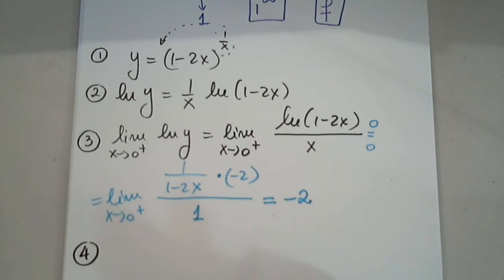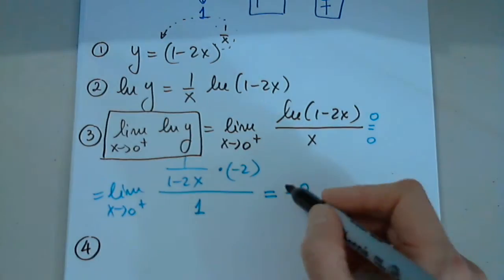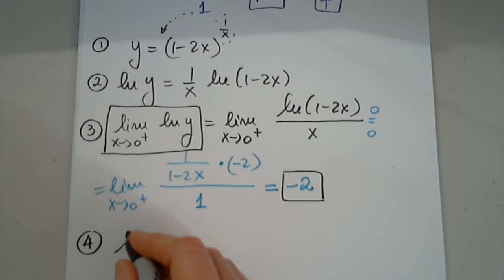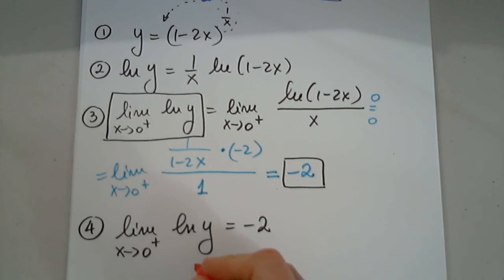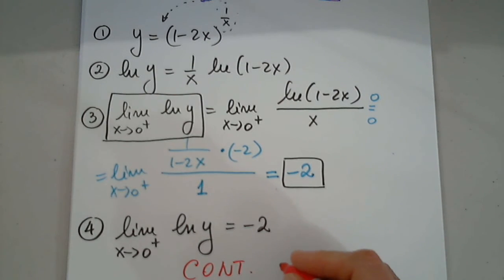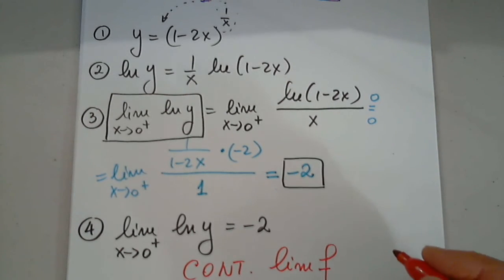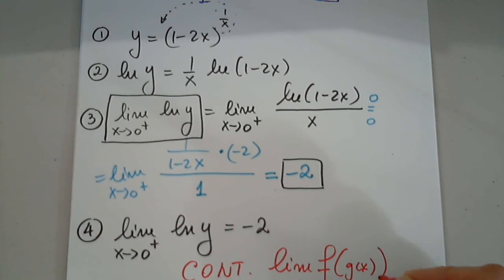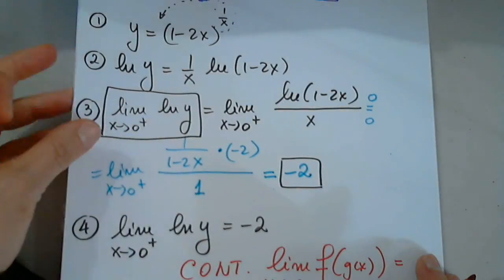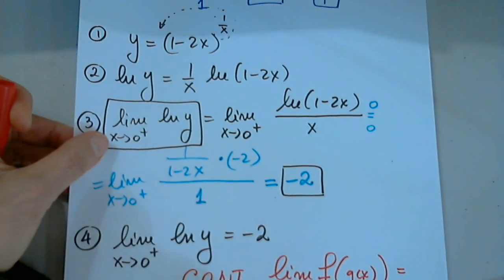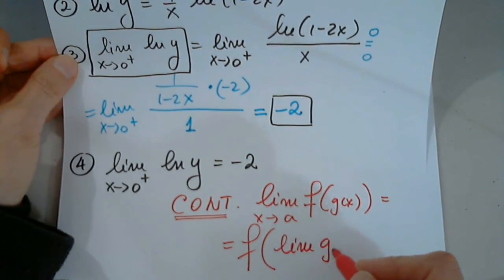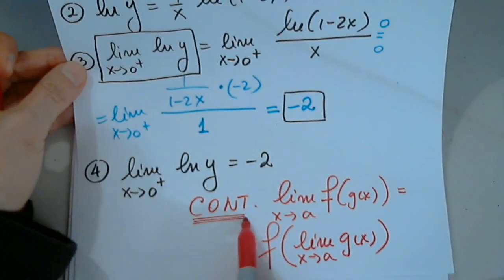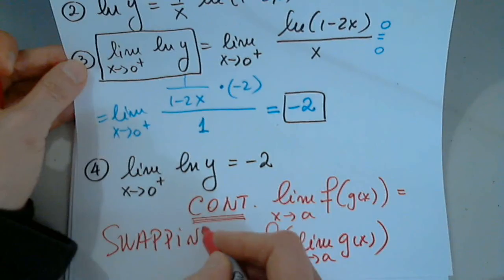Good. So, now in step 4, I copy the beginning and I copy the end. Not the rest in the middle. So, I have limit as x approaches 0 from the right, natural log y equals negative 2. And now, I want to refresh our memory. Under continuity, we are allowed to write the limit of f of g of x as x approaches a. Under conditions of continuity, I'm allowed to swap the operators. F of the limit of g of x as x approaches a. Under conditions of continuity. Swapping of operators.